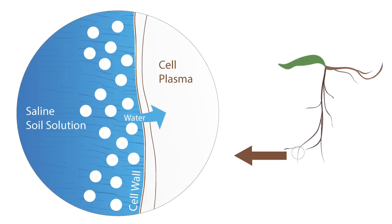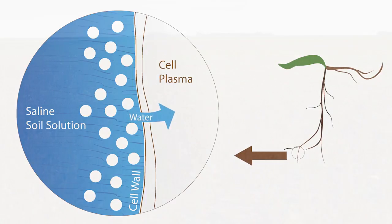Now if we look at that same plant growing in a saline soil we can see that the water uptake is reduced because of the soluble salts in the soil water.